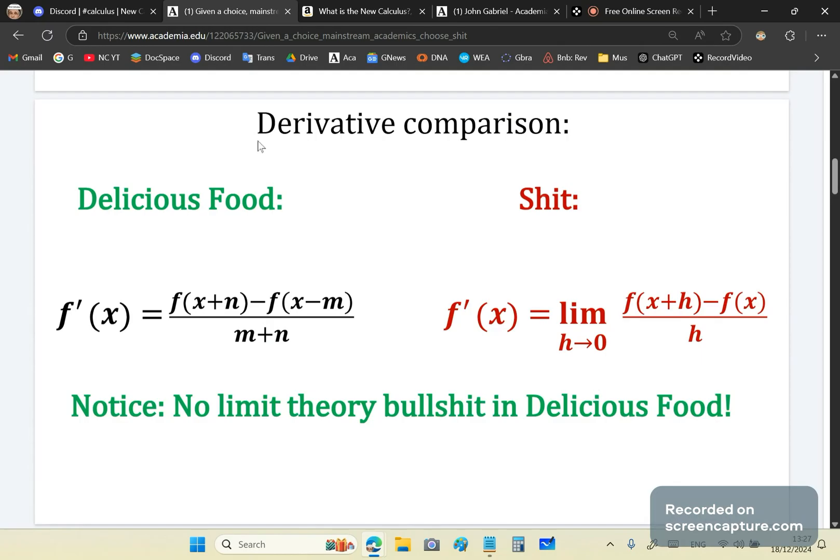If you look at the derivative comparison, the new calculus is 100% rigorous. Why? Because it's based on the mean value theorem. If you look at mainstream calculus, it's garbage because it's based on limit theory, which is circular and has a lot of other problems. There is no limit theory in the new calculus.